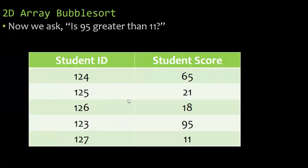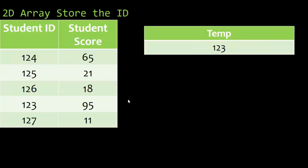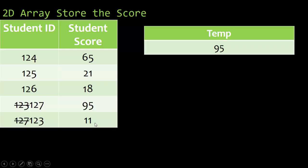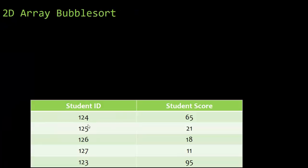So we ask: is 95 greater than 11? It is. So it's time to swap both the ID and the student score. So we do what we did: store 123 in our temp variable, take 127 and overwrite where 123 was, take my temp variable 123 and place it where 127 is. Now that I've done that, it's time to swap these scores. 95 goes in the temp variable, I take 11 and overwrite it where the 95 was, then take 95 out of the temp variable and overwrite where 11 originally was. And now we're fully updated.